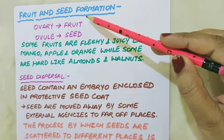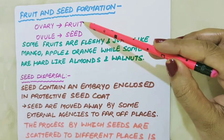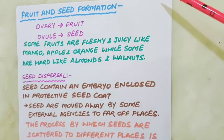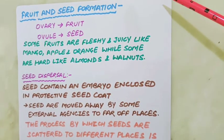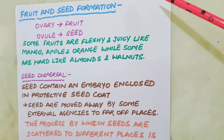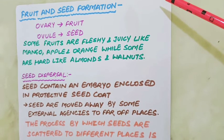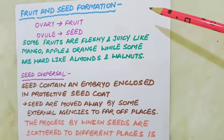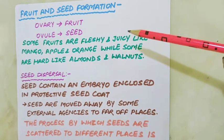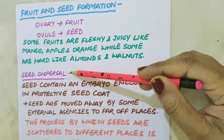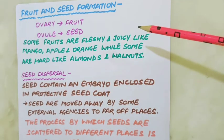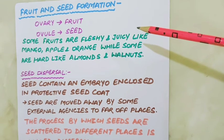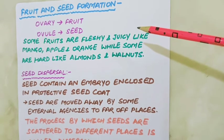After fertilization, the ovary grows into the fruit and the ovule develops into the seed. Fruits are the ripened ovary of the flower, which protects the seed. Some fruits are fleshy and juicy like mango, apple, and orange, while some are hard like almonds and walnuts. Seeds are developed from the ovule and contain an embryo enclosed in a protective seed coat.